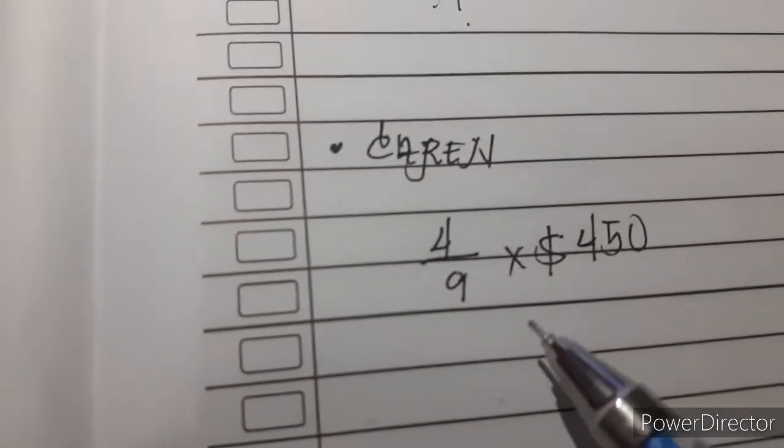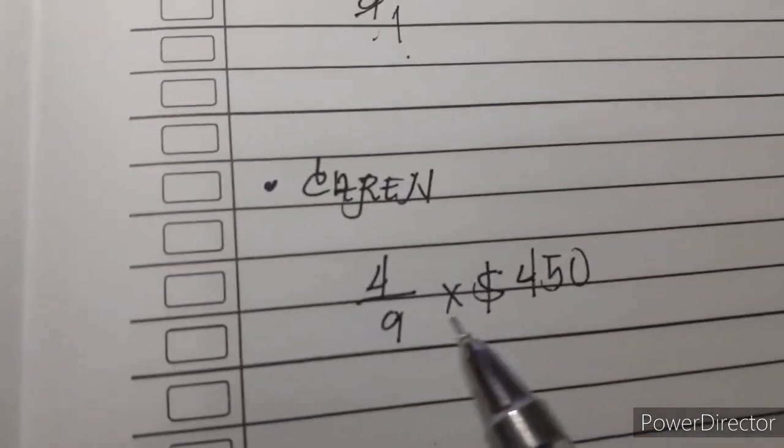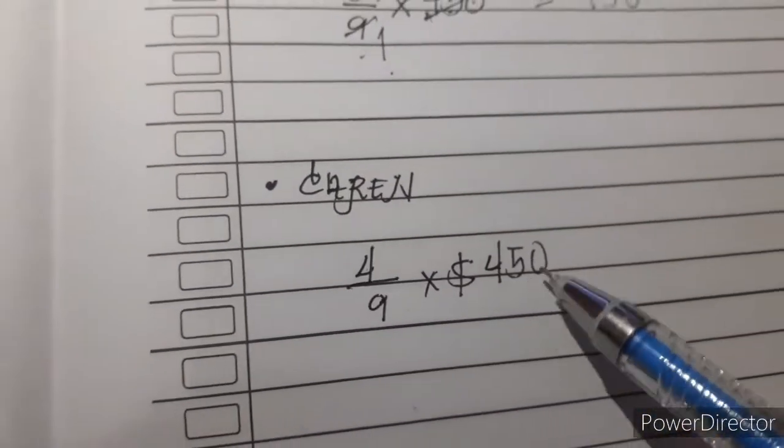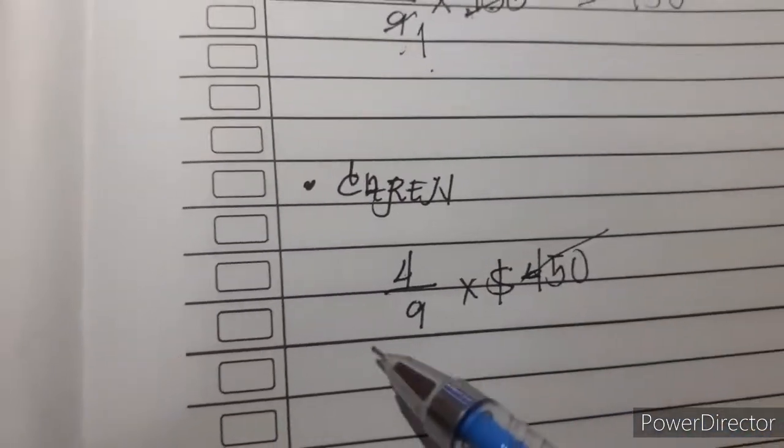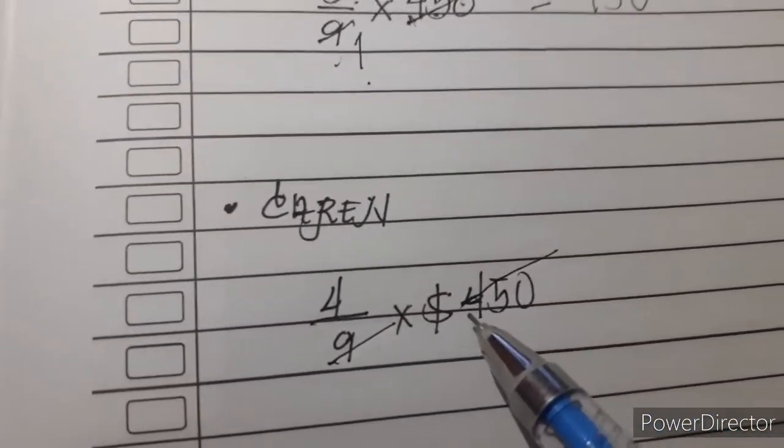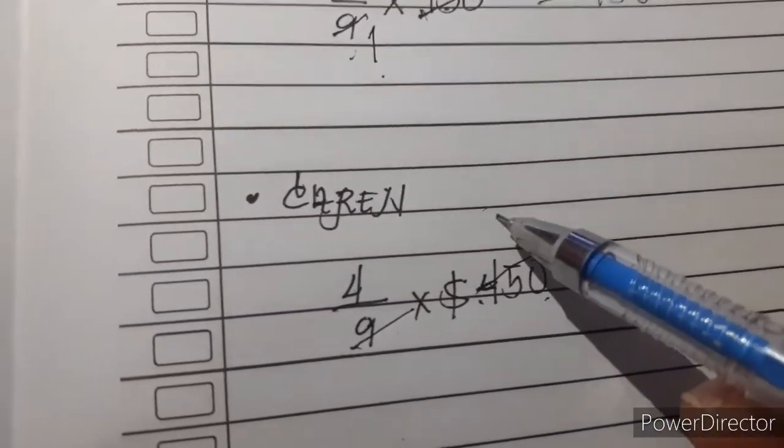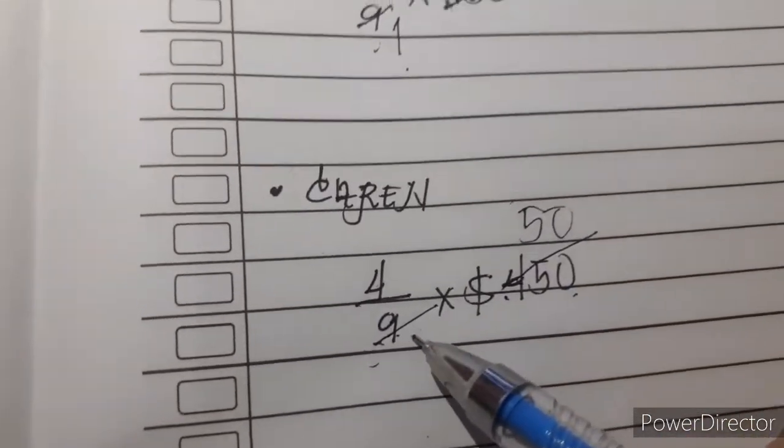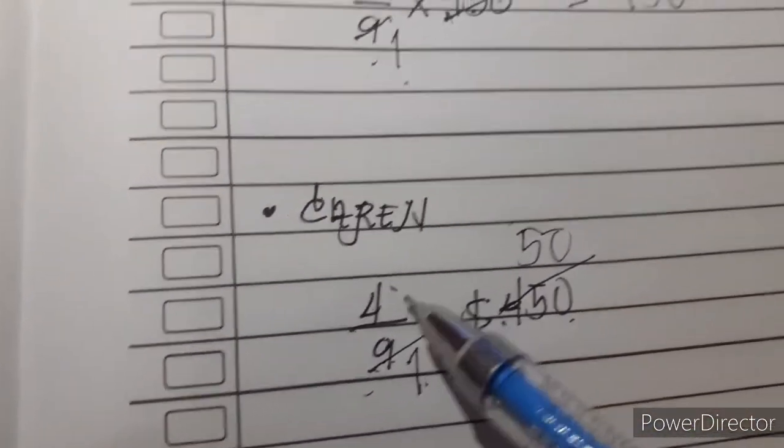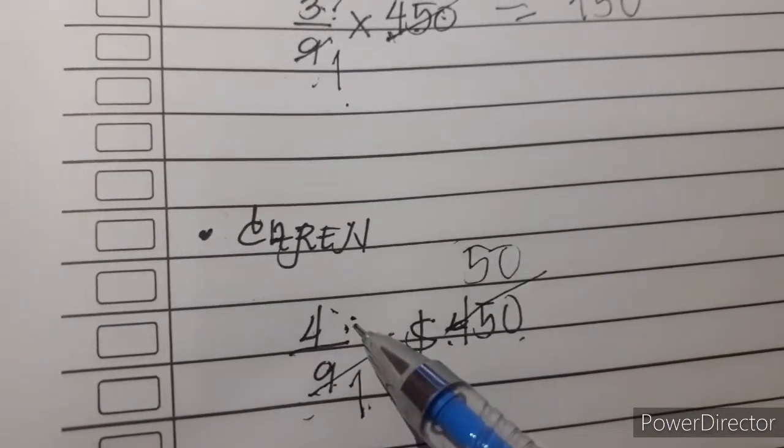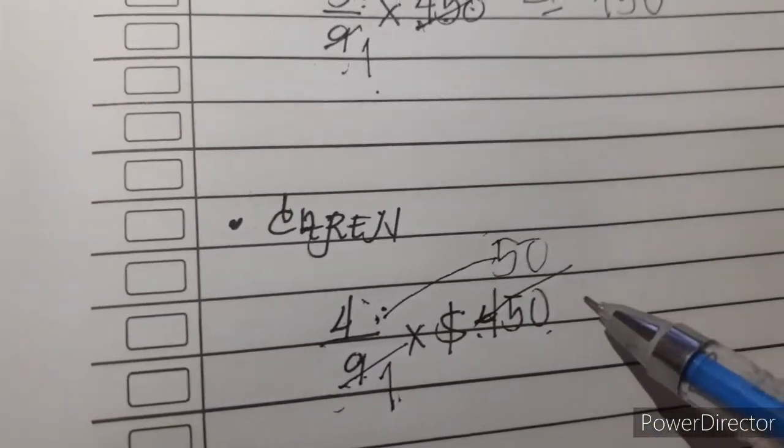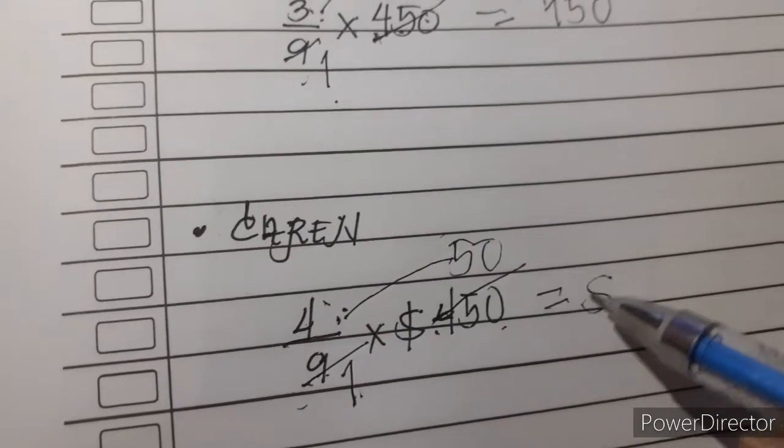Let us proceed to Karen. 4/9 times $450—we cancel again the common factors. $450 divided by 9 is 50, and 9 divided by 9 is 1. 4 over 1 means 4 whole, so we simply multiply 4 times 50, which equals $200.